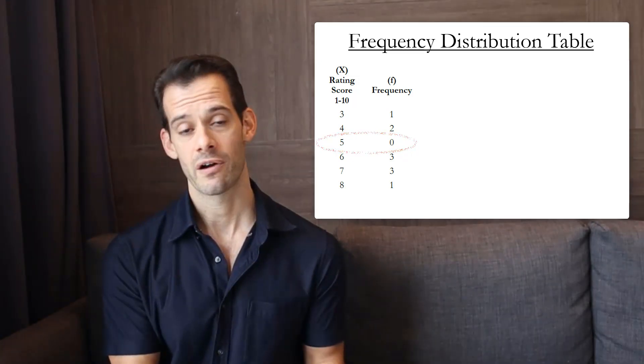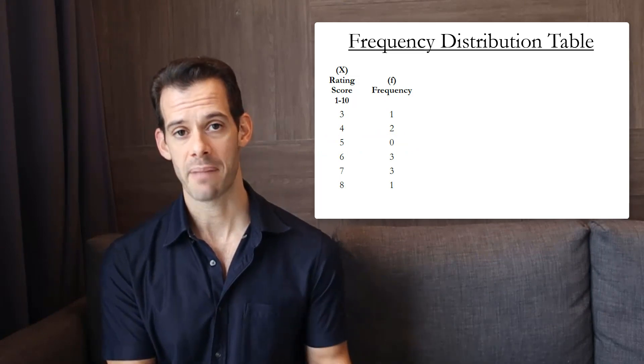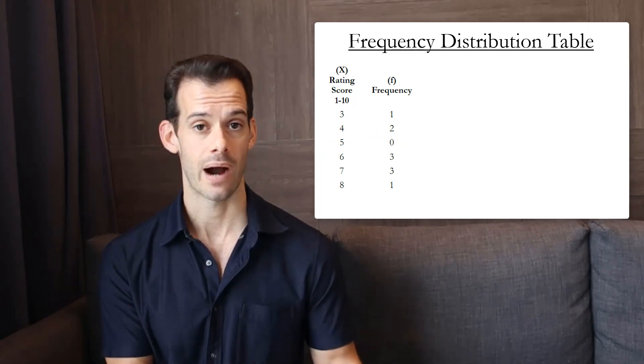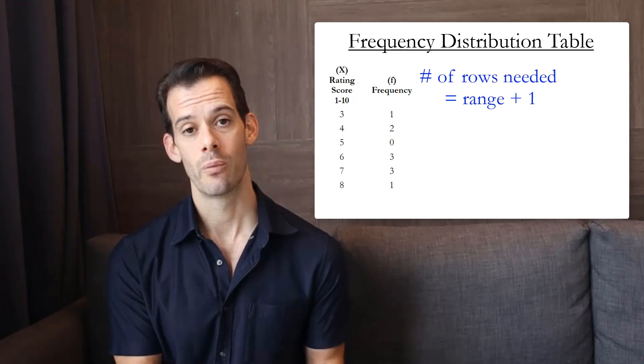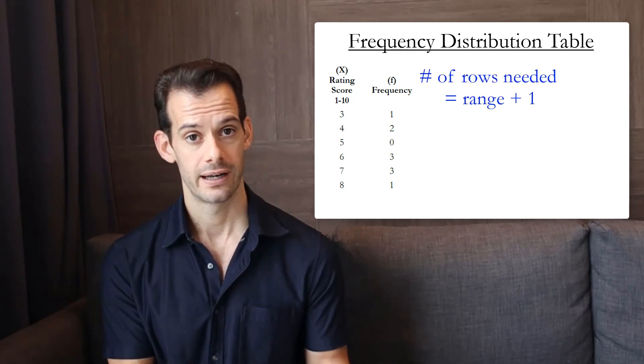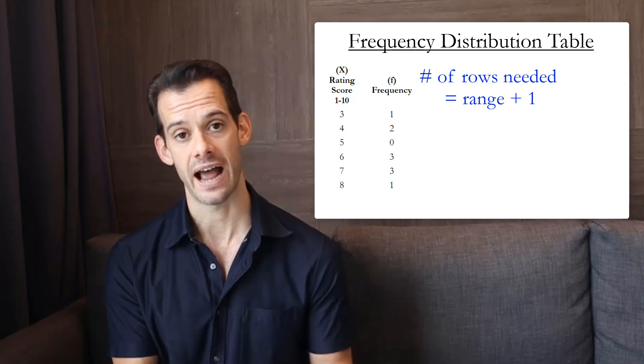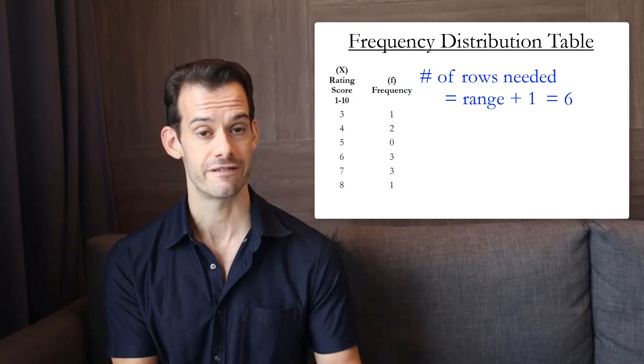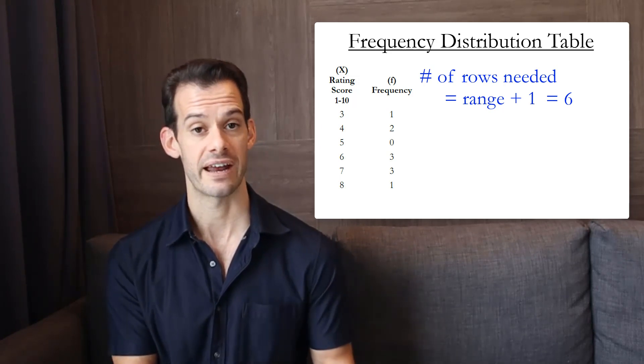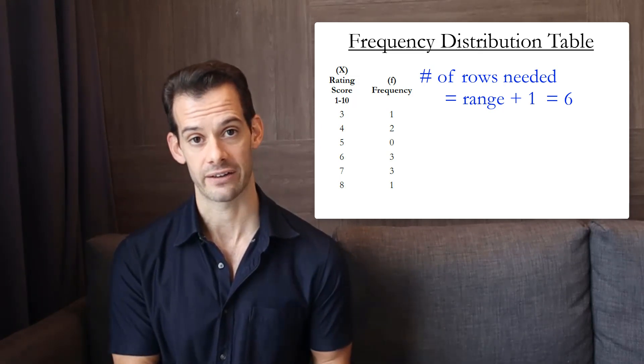So we're starting with our lowest score including a row for every possible value of x until we get to our highest score. And this means that the number of rows that we'll need will be the range plus 1 and that's because it's inclusive of the highest and lowest score. So in this example we can see that we had a range of 5 and that means we'll need 6 rows in order to present all of those possible values of x.